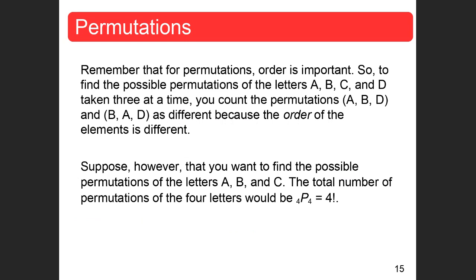Remember that for permutations, order is important. To find the possible permutations of the letters A, B, C, and D taken three at a time, there are four choices, so this is four permutate three. Using the formula: 4! over (4-3)!, which is 1 factorial. That gives 4×3×2×1 = 24. There are 24 different ways to arrange four letters taken three at a time, and order does matter.